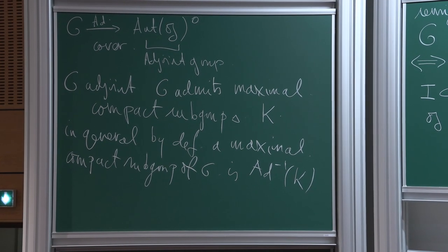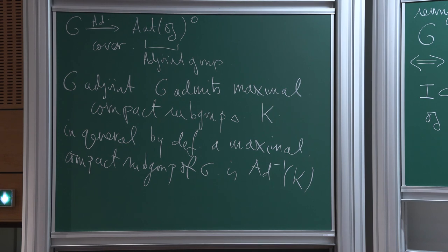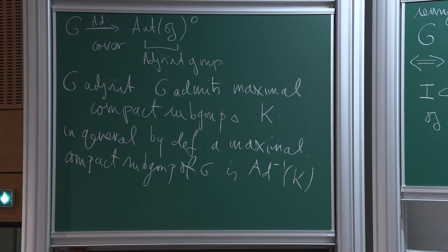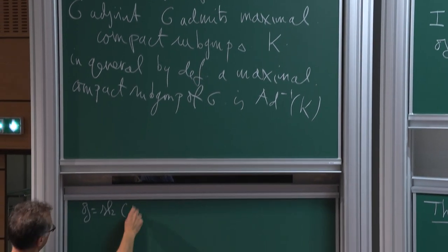If you ever hear someone say 'of Harish-Chandra type,' this is what they mean — that the cover is finite so you can make sense of compact subgroups. The only counter-example is when the fundamental group of the adjoint group is infinite. For example, this is the case if the Lie algebra is sl(2,R). If you take G to be the universal cover of SL(2,R), the maximal compact subgroup pulled back is no longer compact.